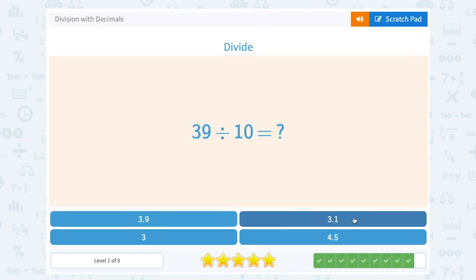39 divided by 10. Well, 3.9. Just move your place value one.